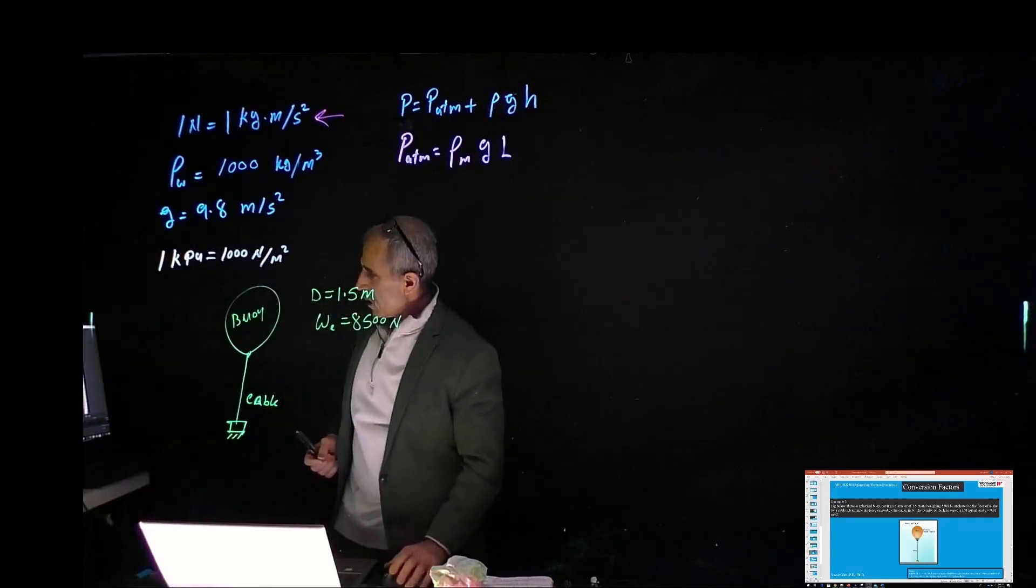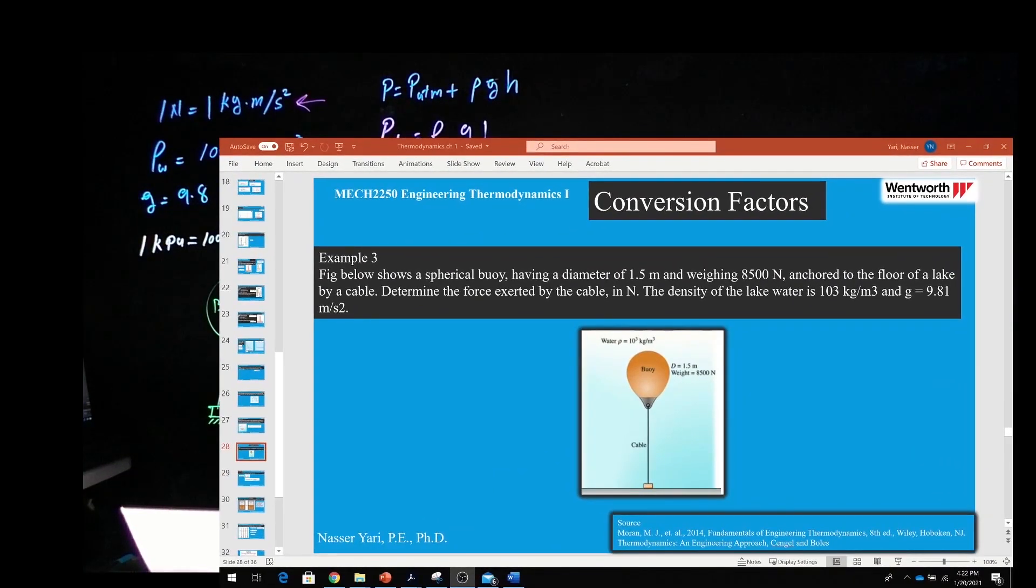Our next problem is a buoy with a diameter of 1.5 meters and the weight is about 8,500 Newtons. What's the force in the cable in Newtons given the water is 1,000 kilograms per cubic meter and the gravitational force applied.